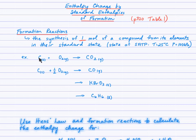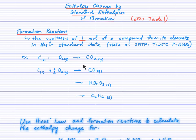For example, carbon dioxide is made of carbon, which is a solid at room temperature and not diatomic, and oxygen, which is a gas at room temperature and is diatomic. So we write carbon solid plus O₂ gas, then balance. There's one carbon on each side and two oxygen on each side, so this equation is balanced.